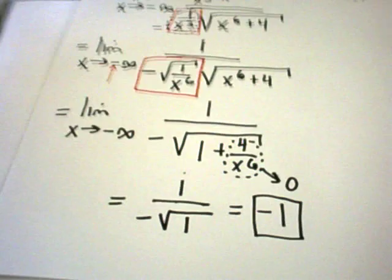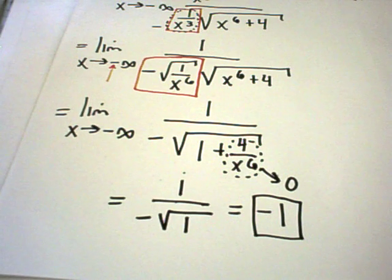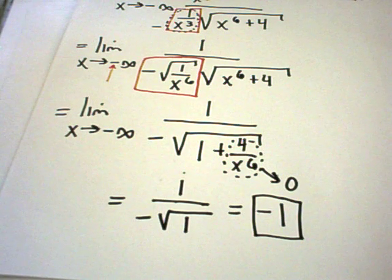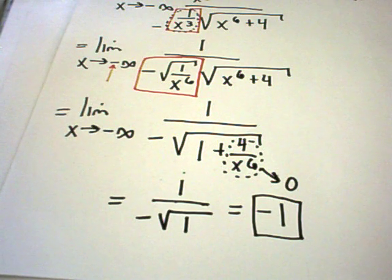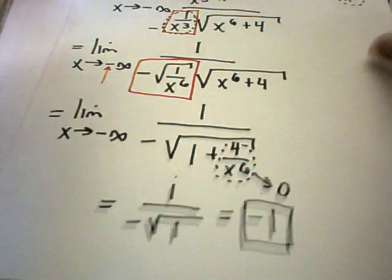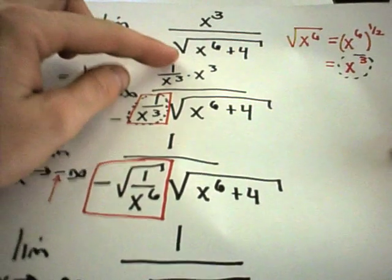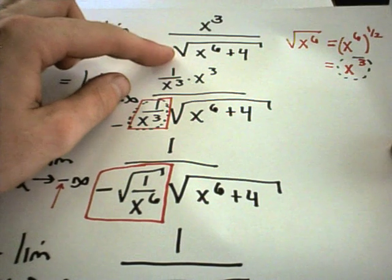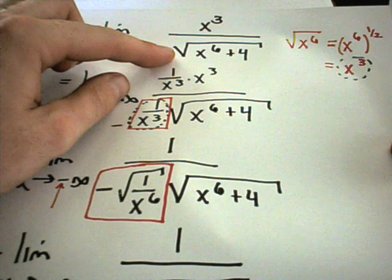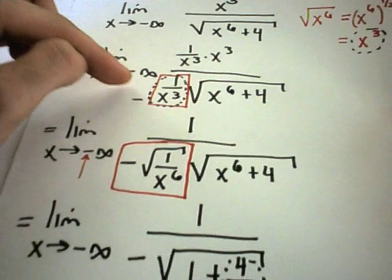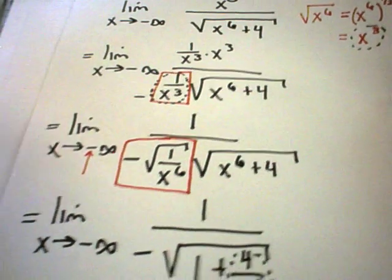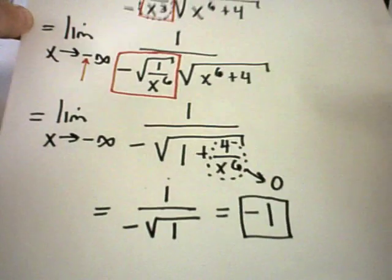So this is the basic trick on how to deal with limits when there's radicals involved. Again, try to pick out the highest power underneath the radical. Do whatever the operation is. Because in this case it was taking a square root. And then again, remember to throw on negatives if they're needed. But again, that's something you have to think about.